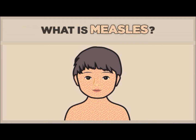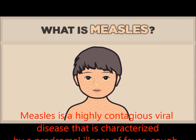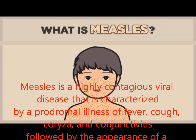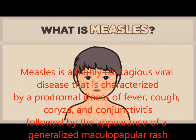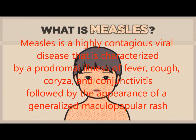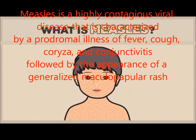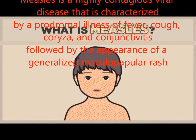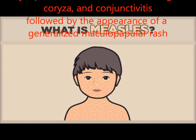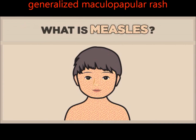Measles, also known as rubeola, is a highly contagious viral disease that is characterized by a prodromal illness of fever, cough, coryza, and conjunctivitis, followed by the appearance of a generalized maculopapular rash.